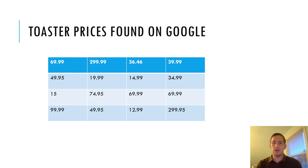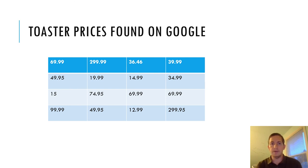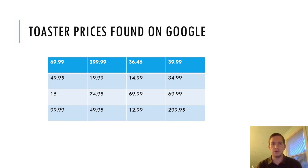To talk about data, I'm going to use an example — just the different measurements collected from different individuals in my sample. My population is toasters, so each individual toaster is part of my population. My sample is the toasters I found when I searched Google Shopping, and the variable I'm looking at is the price of the toaster.